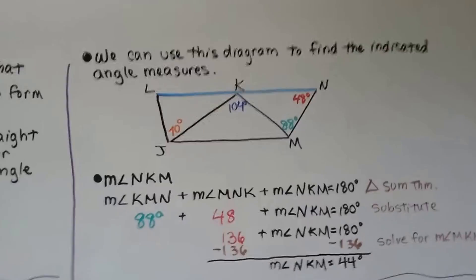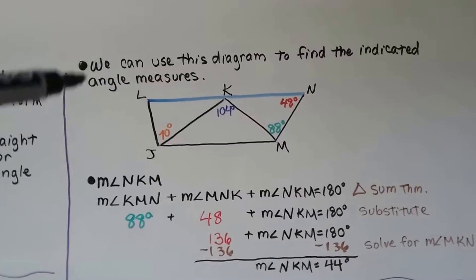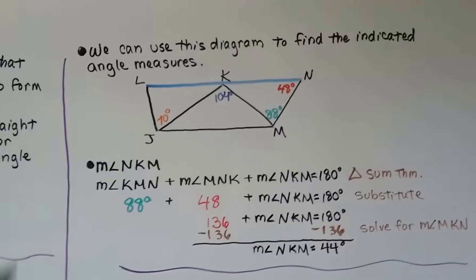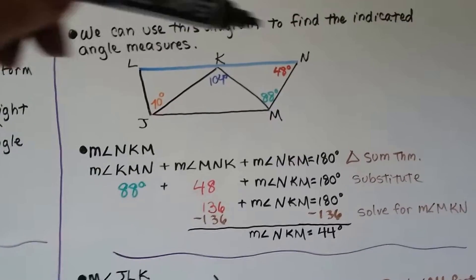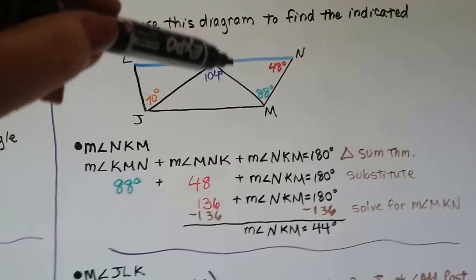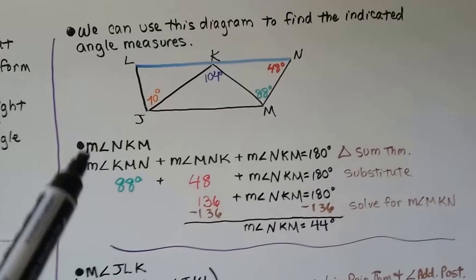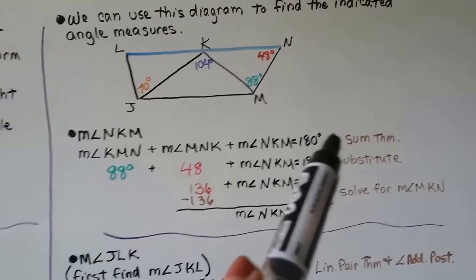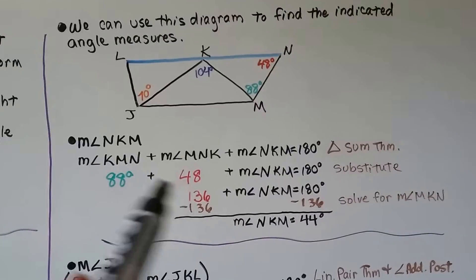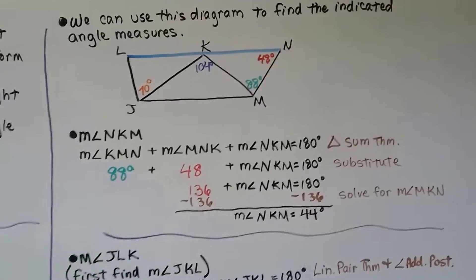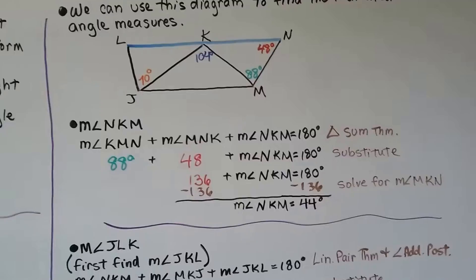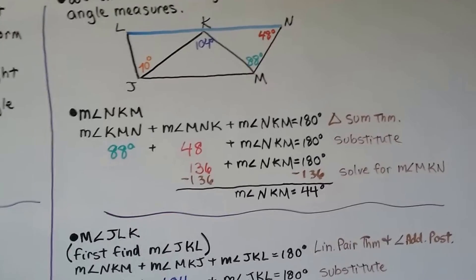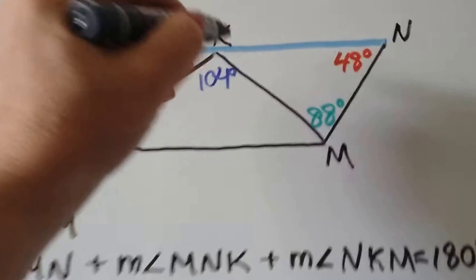This next one is more involved. We have a diagram with auxiliary line LN and several angle measures but not all. To find angle NKM, we use the Triangle Sum Theorem: the measure of angle KMN (88 degrees) plus angle MNK (48 degrees) plus the missing angle NKM equals 180 degrees. Adding 88 and 48 gives 136; subtracting from 180 gives us the measure of angle NKM equals 44 degrees.